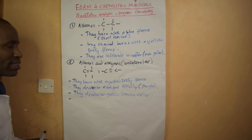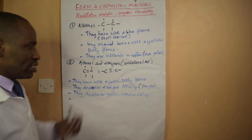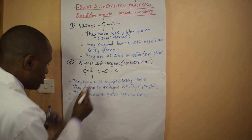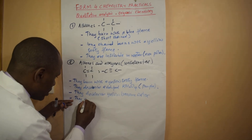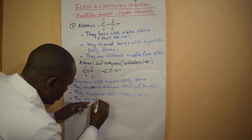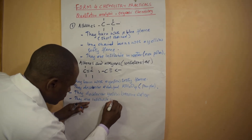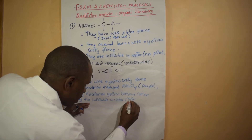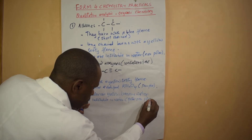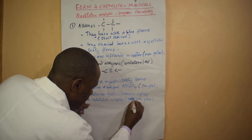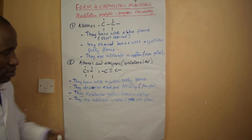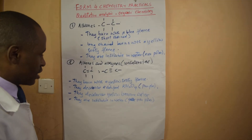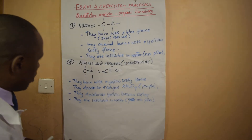Alkenes and alkynes are also insoluble in water — they are non-polar. They cannot form hydrogen bonds with water, which is why they are unable to dissolve in water.